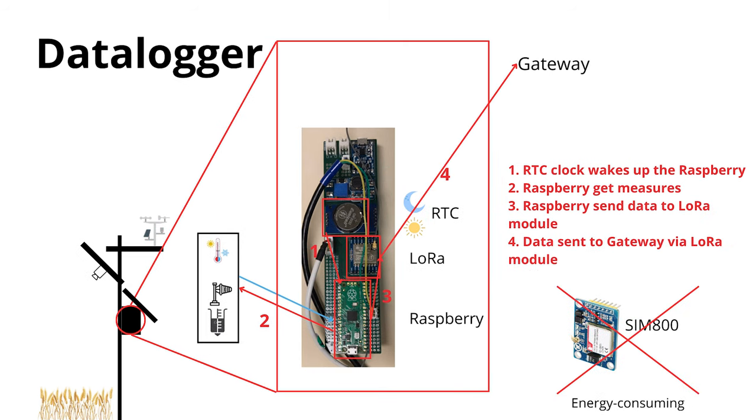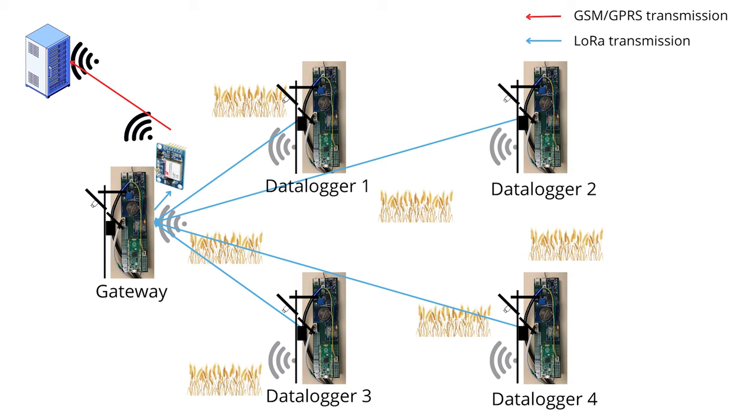If you have a network of sticks, not all sticks will have a GSM or GPRS card because it consumes a lot of energy. This card is called a data logger. What has been thought out is that all the data from the data logger are sent to the gateway, which then sends it to the server.